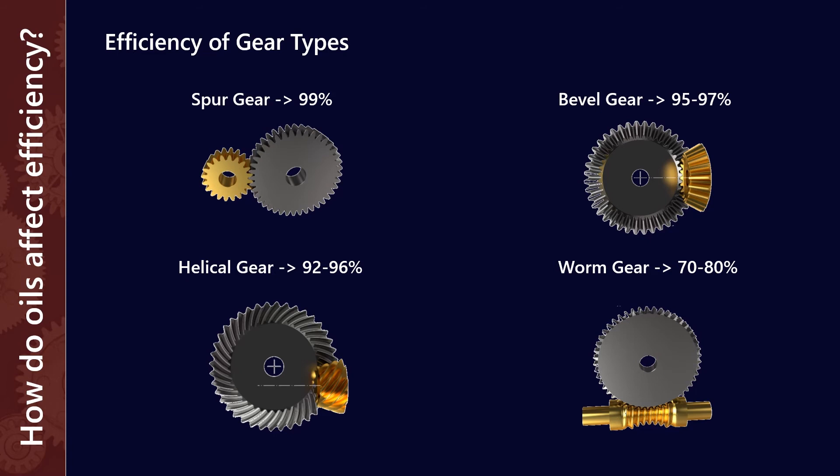Whereas with worm gears, there's a lot more sliding. So we get a lot more bang for our buck if we were to switch to a synthetic lubricant in a worm gear application.